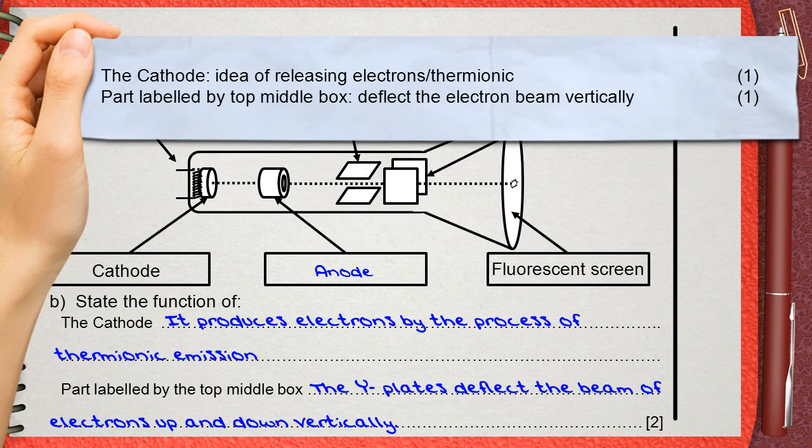Two marks are given. One for the function of the cathode—you must explain any idea of releasing electrons or thermionic emission. The second mark is for the function of the Y plates, which deflect the electron beam vertically.